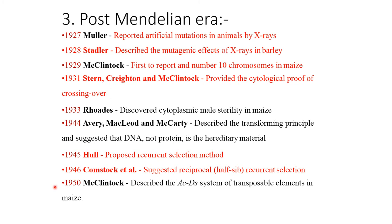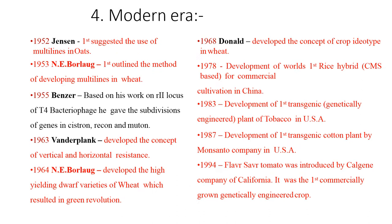In 1945, Hull proposed the recurrent selection method. In 1946, Comstock et al. suggested reciprocal, that is half-sib, recurrent selection.